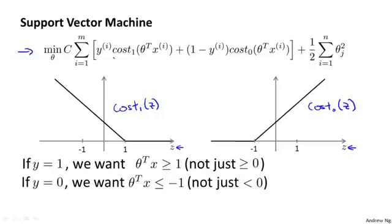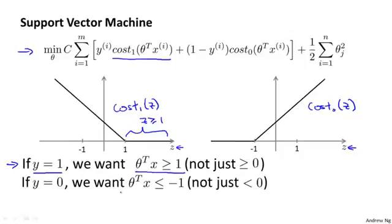If you have a positive example, so if y is equal to one, then cost one of z is zero only when z is greater than or equal to one. So in other words, if you have a positive example, we really want theta transpose x to be greater than or equal to one. And conversely, if y is equal to zero, we look at this cost zero of z function — it's only in the region where z is less than or equal to negative one that cost zero of z is equal to zero.